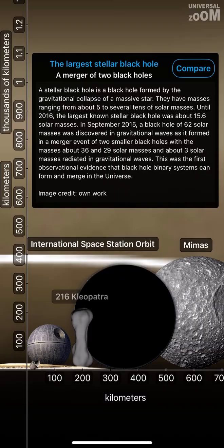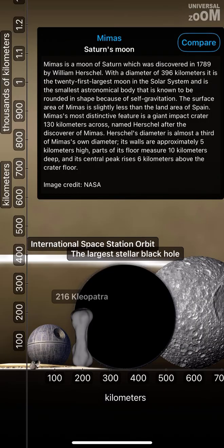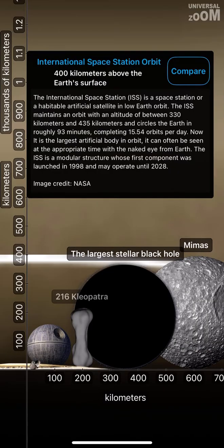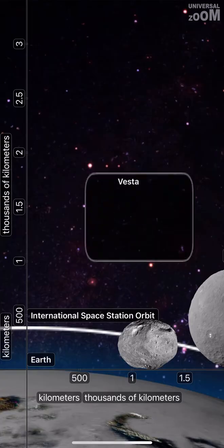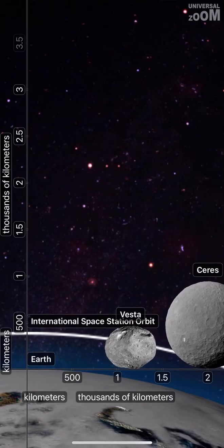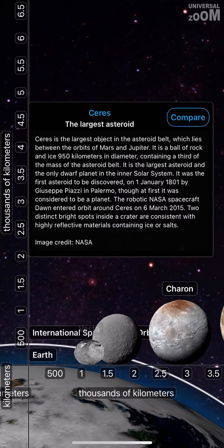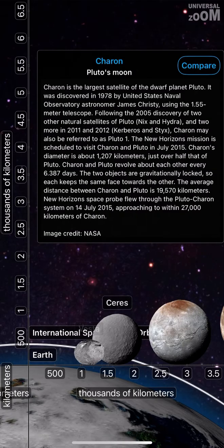216 Cleopatra, a large main belt asteroid. The largest stellar black hole. Mimas, Saturn's moon. International Space Station orbit 400 km above the Earth's surface. Vesta, one of the largest asteroids. Ceres, the largest asteroid. Charon, Pluto's moon.